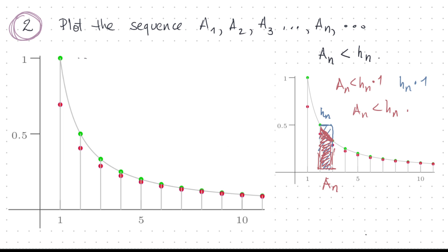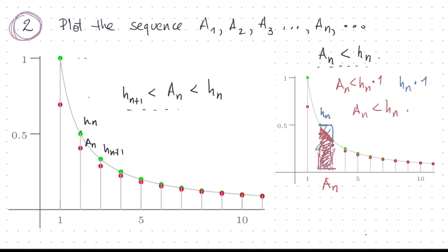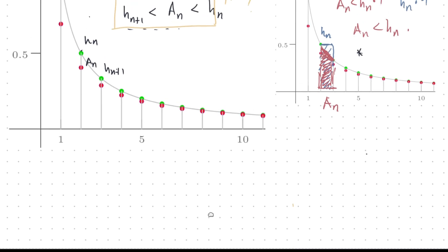Looking at the graph more carefully, we see the red dots (AN) are always between the green dots. The ordinates of AN are between those of the greens. So for a given N: HN+1 is strictly less than AN, which is strictly less than HN. This is a tighter package, and the question is — can we prove this? Yes, and to prove it we will use properties of the Euler sequences.